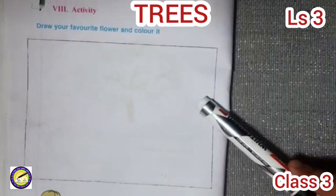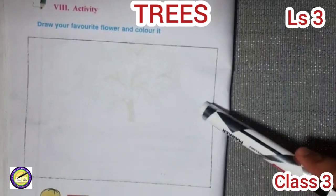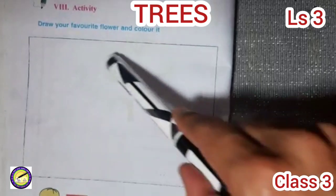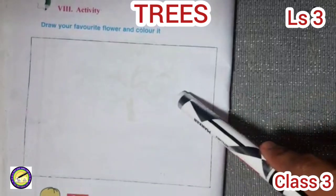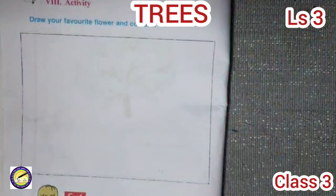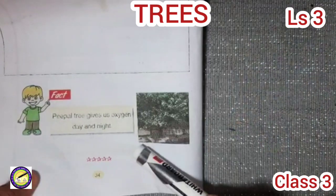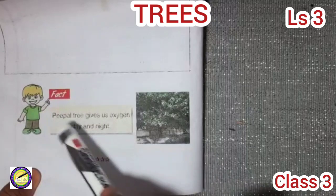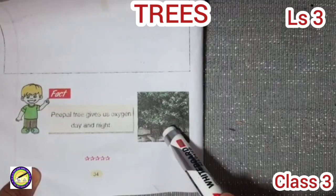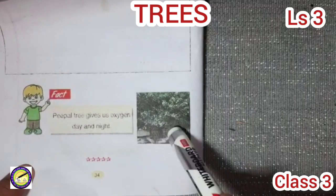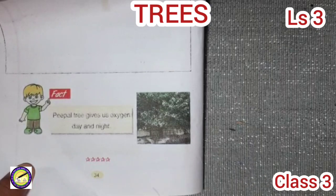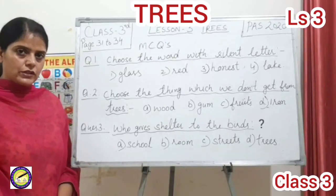On the last page, there is an activity for you — you have to do it yourself: draw your favorite flower and color it. There is also a fun fact given: trees give us oxygen day and night.